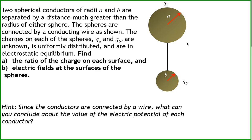Two spherical conductors of radii A and B are separated by a distance much greater than the radius of either sphere. The spheres are connected by a conducting wire. The charges on each of the spheres are unknown, uniformly distributed, and are in electrostatic equilibrium. Find the ratio of the charge on each surface and the electric fields at the surfaces of the spheres.